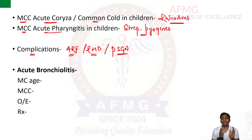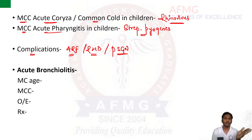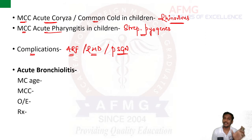Streptococcus pyogenes is Group A beta-hemolytic streptococci. In PSGN, there is a characteristic history: the child had sore throat or pharyngitis, and within two to three weeks, is brought with complaints of hematuria — classically described as cola-colored urine.